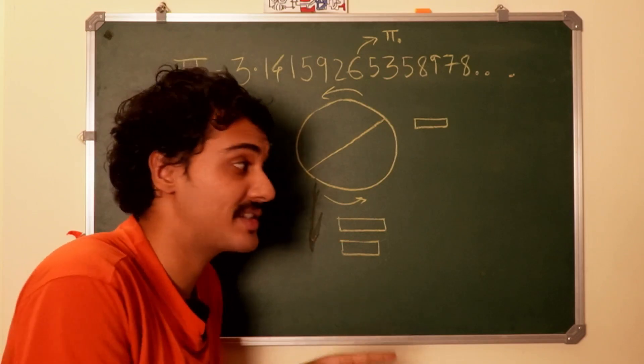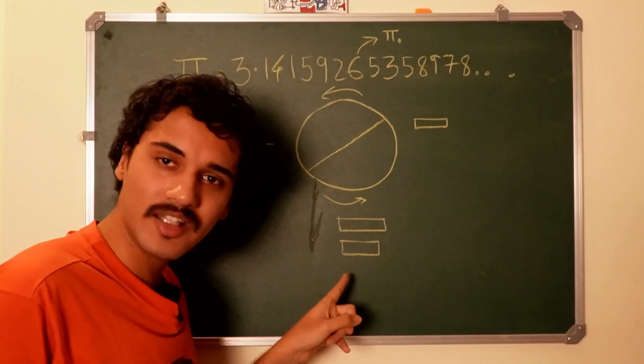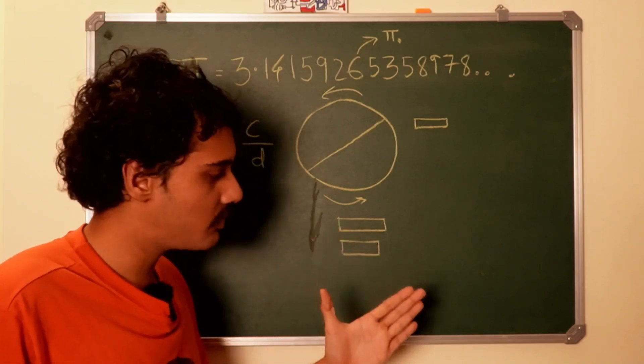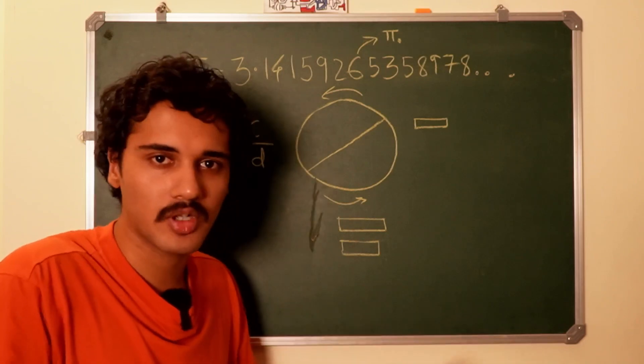But Einstein said no, this is a real length contraction and this is the currently accepted view—that this is a real length contraction when you have a meter stick and it starts moving. It actually gets shorter with respect to you.